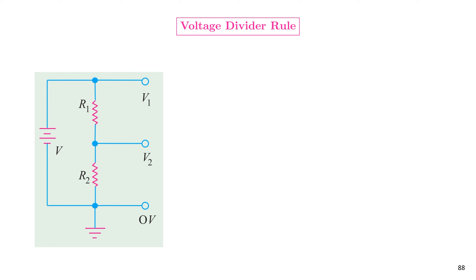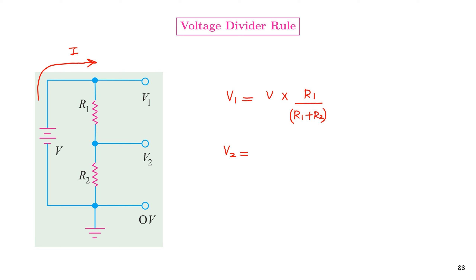A brief note on the voltage divider rule: if a voltage source V drives current through resistors R1 and R2 in series, the voltage drop V1 across R1 is V × R1/(R1 + R2), and the voltage drop V2 across R2 is V × R2/(R1 + R2).